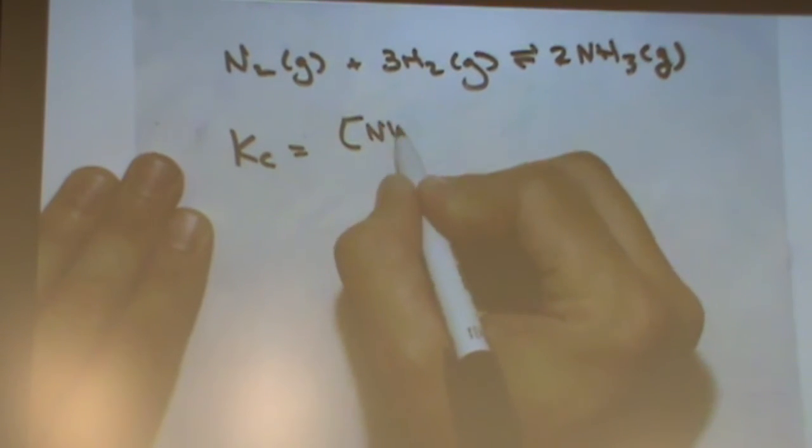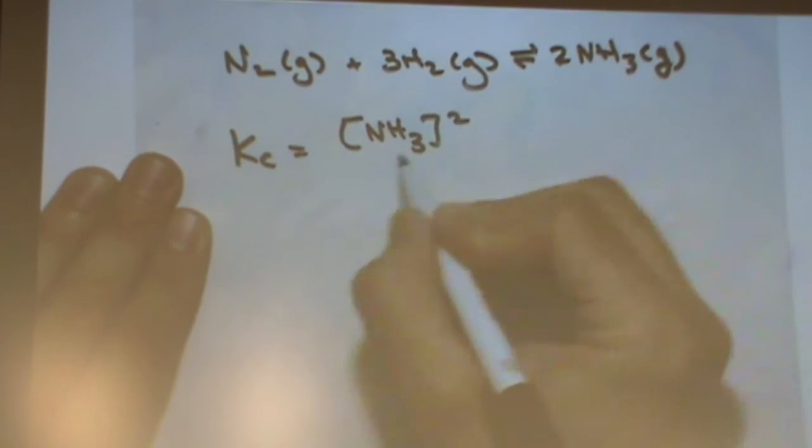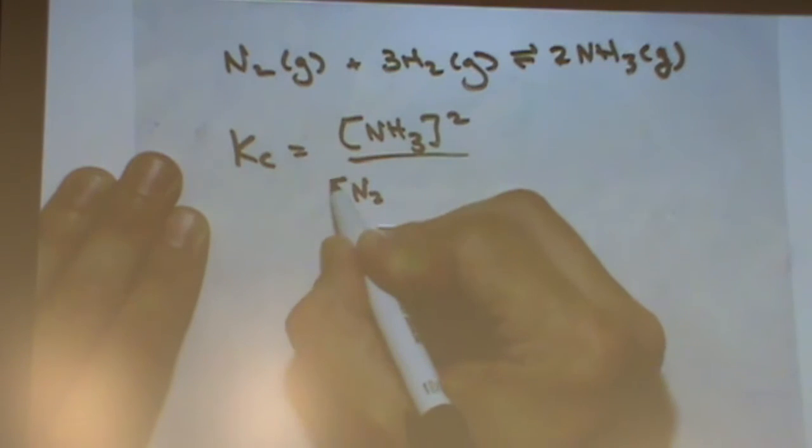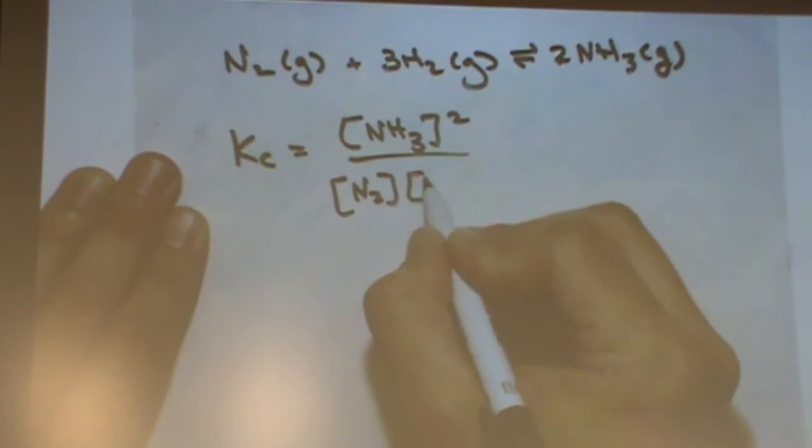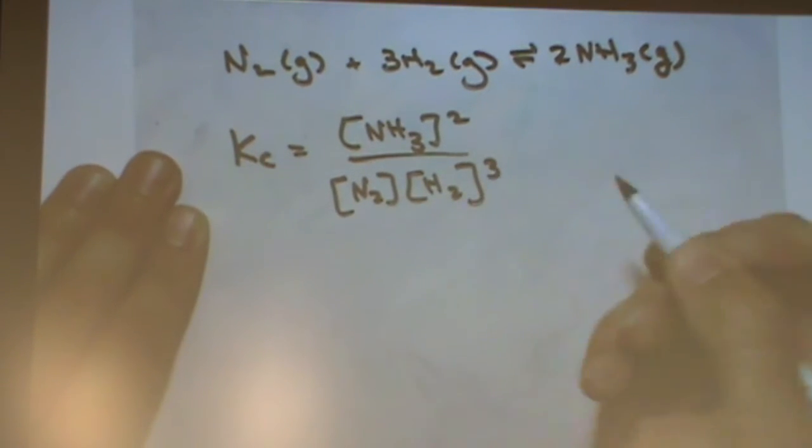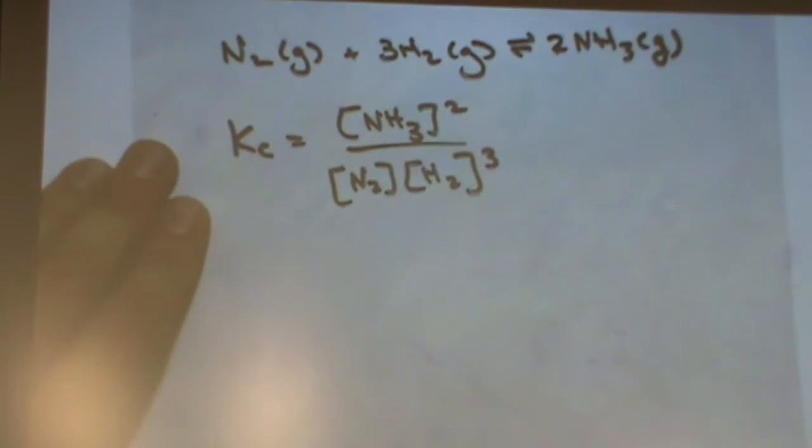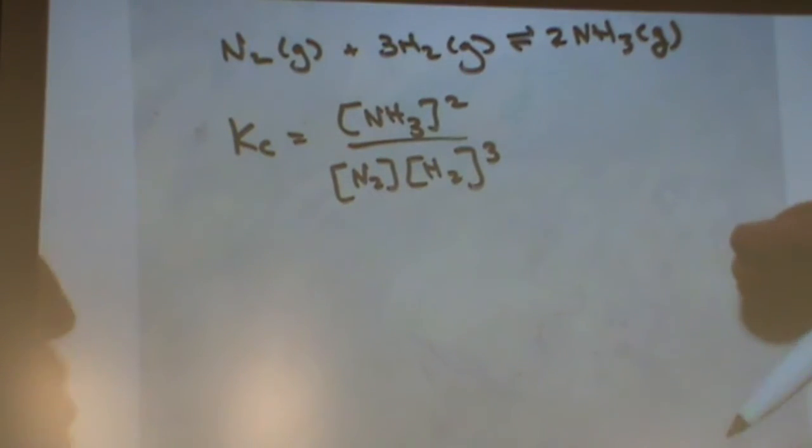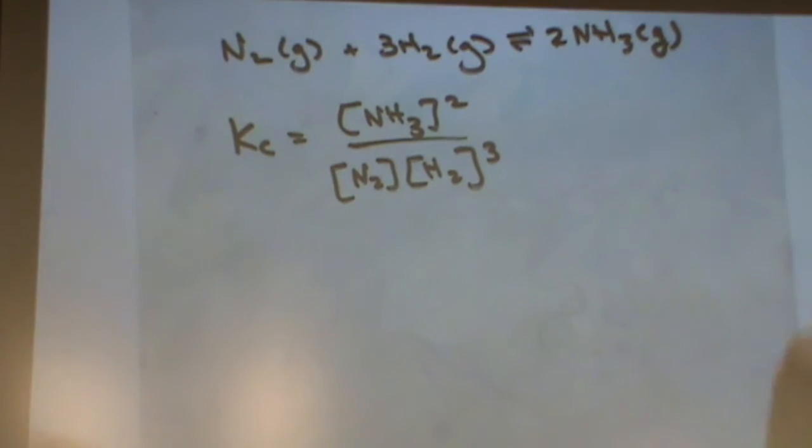Kc is the concentration of NH3 squared over N2 times H2 cubed. So that would be generally what we would do. We could solve an ice table problem for this if they gave us initial concentrations, that sort of thing.